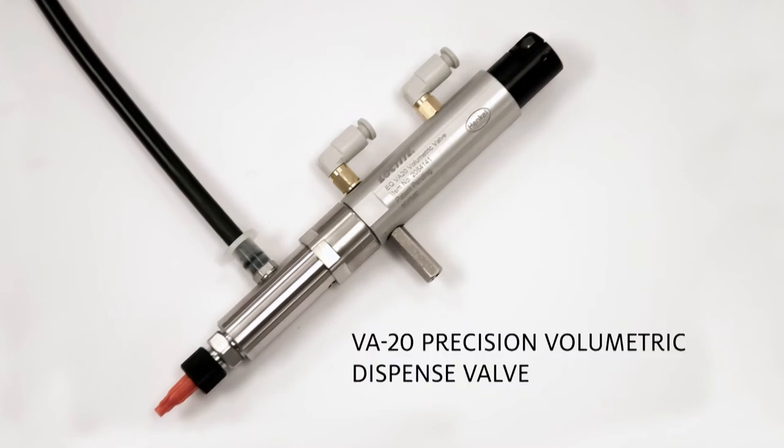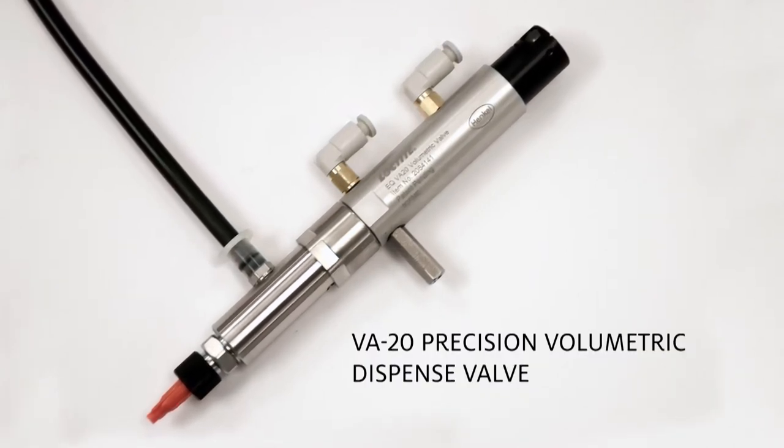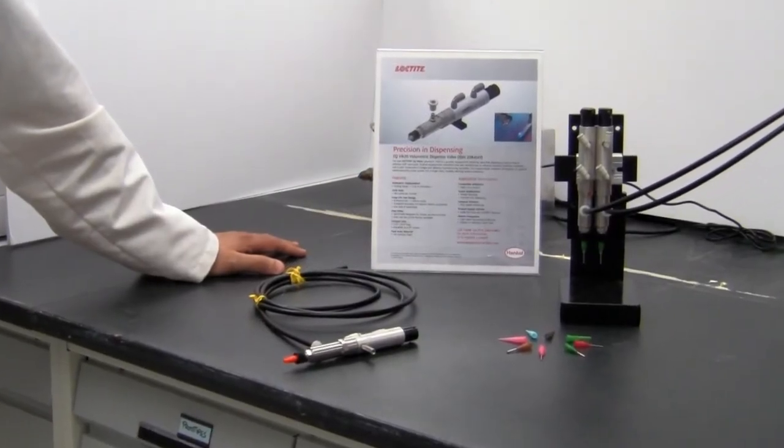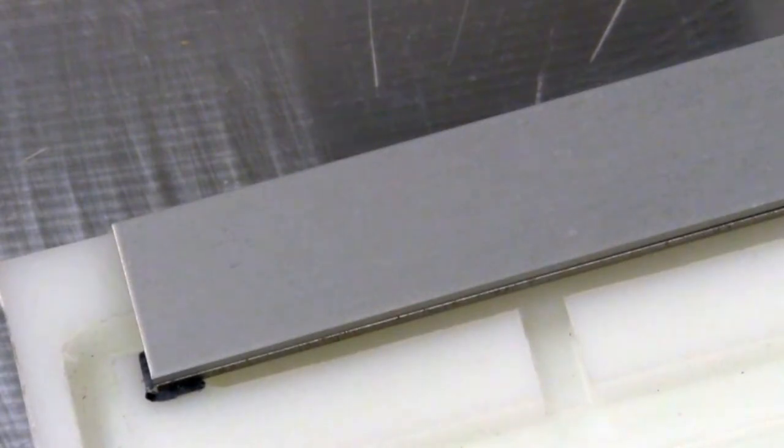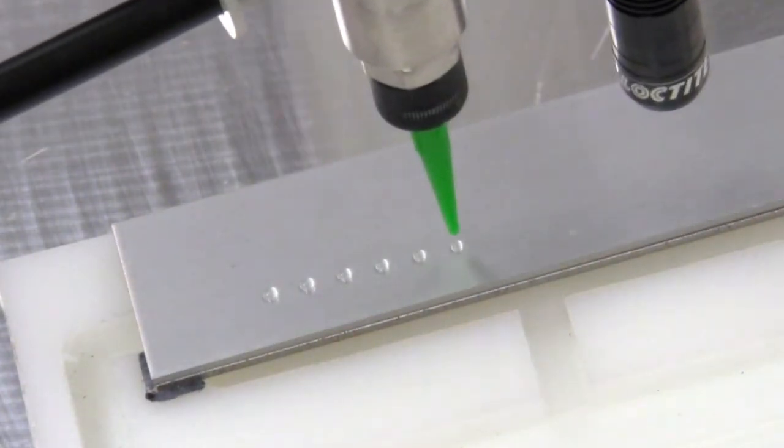Loctite's VA20 Precision Volumetric Dispense Valve is designed based on a positive displacement principle. A displacement chamber which displaces adhesive specifically with each stroke of the valve allows the exact amount of adhesive to be dispensed with every cycle.